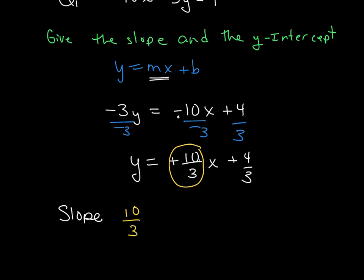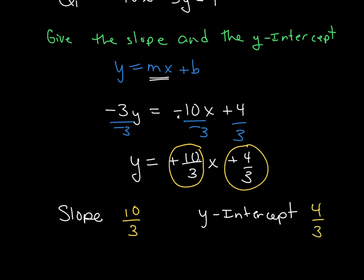The next question they're asking is what is the y-intercept. You're only putting in the 4 over 3. Do not put it in decimals — you want to write it as a fraction.